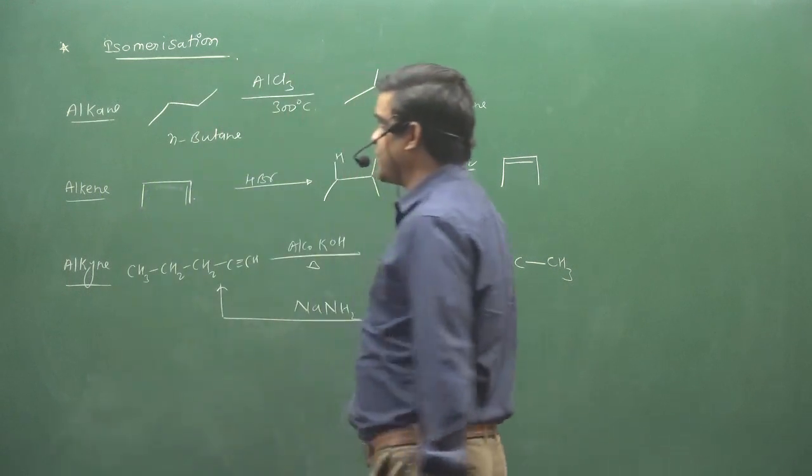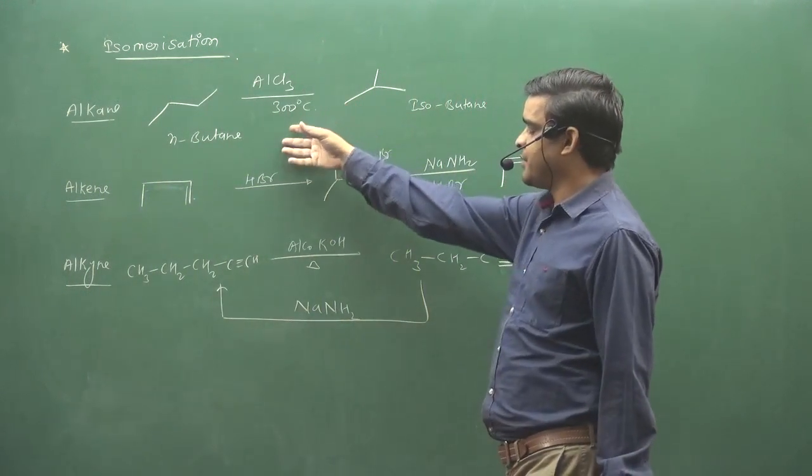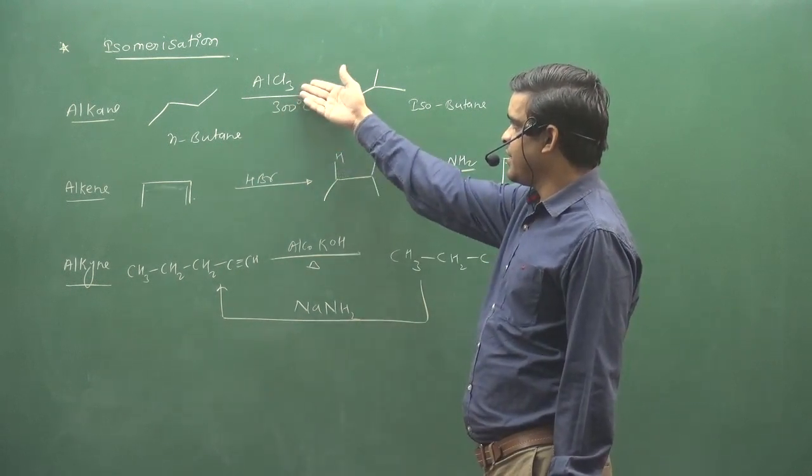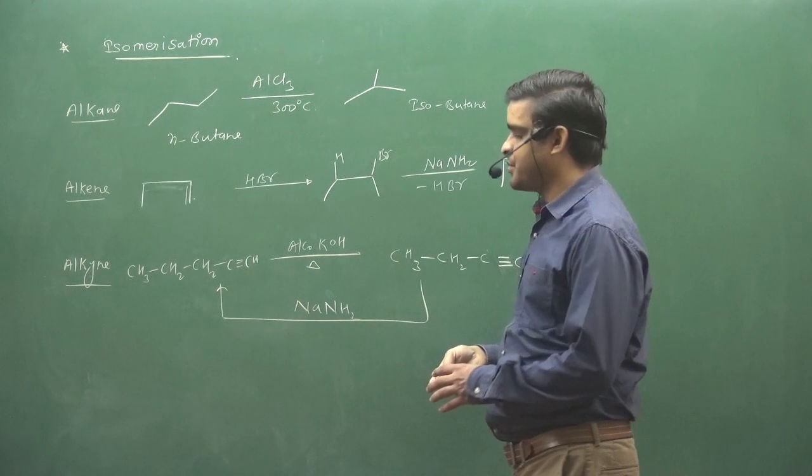Isomerization is when a compound is changed into its own isomer. For example, in alkanes, butane with AlCl3 will change into isobutane.